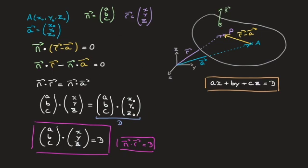Now let me add something about capital D — the value on the right-hand side. Capital D is in fact a scalar multiple of the perpendicular distance from the plane to the origin. To see why, it's important to remember where D comes from: it comes from the dot product of the normal n with the position vector of point A. Let me draw a side view of the plane, so we're seeing a flat surface like so.